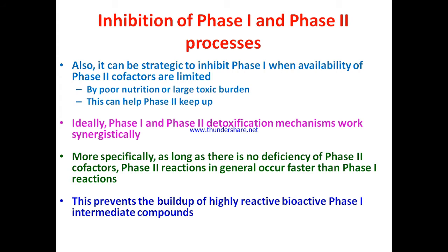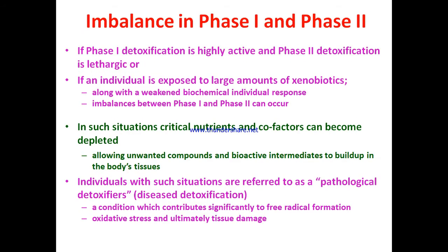The reason phase two is generally faster is that in most cases the metabolic intermediate produced after phase one is more active and often more toxic than the original compound. A faster phase two removes those chemicals immediately from the body, preventing the build-up of highly reactive bioactive phase one intermediate compounds.